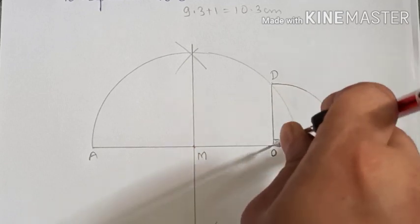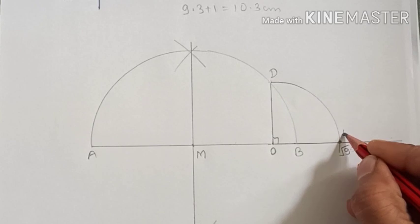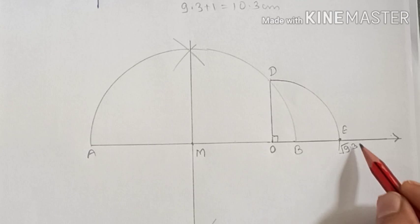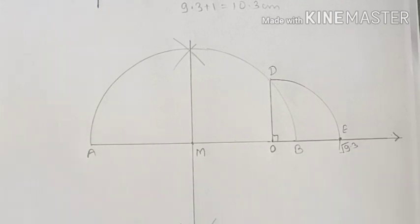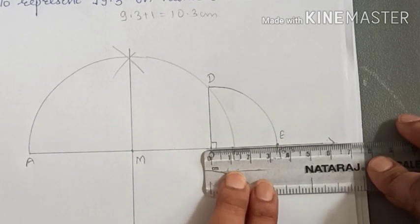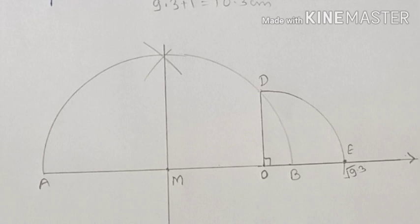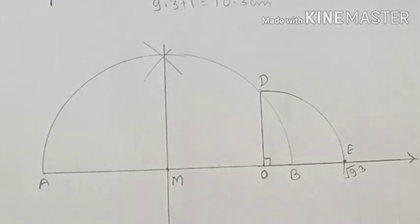Now put your compass with center at O and pencil at D — that means take OD as the radius — and draw an arc that intersects the number line. That intersection point is root 9.3, let it be E. To verify: root 9.3 should be close to root 9 which is 3, so it should be 3 point something. When you measure with a scale, this point falls just above 3 on the number line — so the representation is correct.